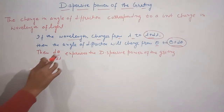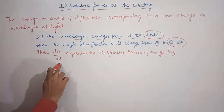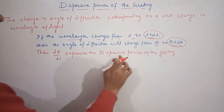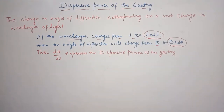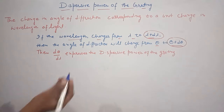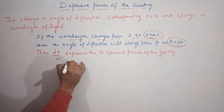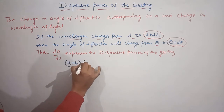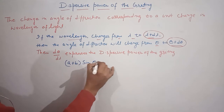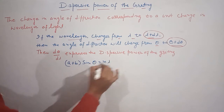This is the dispersive power of the grating. Now let's derive the relation d-theta by d-lambda for the grating. The n-th order principal maxima is given by: (a + b) sin θ = nλ.